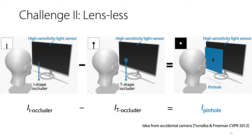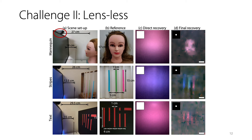To tackle this, we introduce an occluder between the scene and the screen and use the deformation of the occluder to form pinhole imaging. This idea is borrowed from the accidental camera, which has also inspired many passive non-line-of-sight imaging applications. We show that general diffuse objects can be revealed in front of the screen with an occluder, as shown in the third column. If there is no occluder, the recovered image would be highly blurry. However, with an occluder and our reconstruction algorithm, we can see the rough structure of the scene — like the eyes of the mannequin as well as colors of the strips.